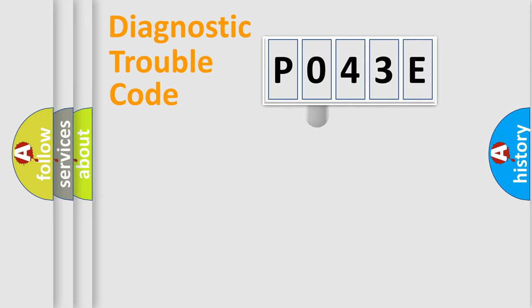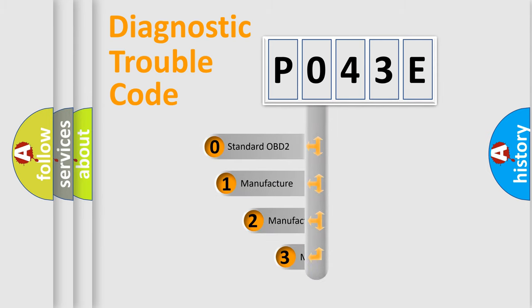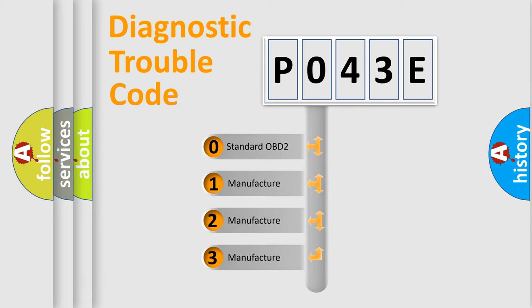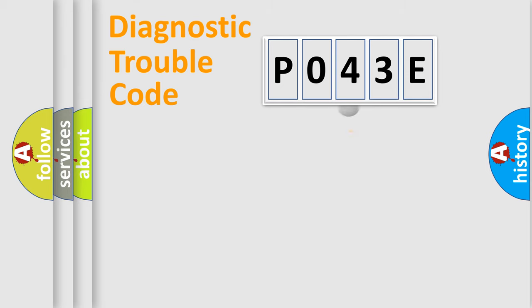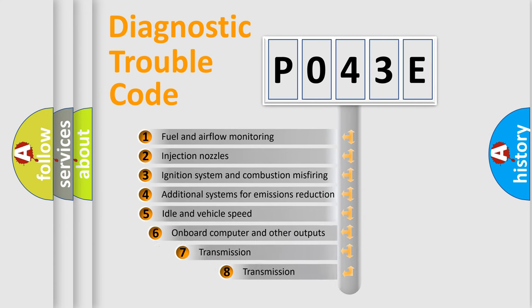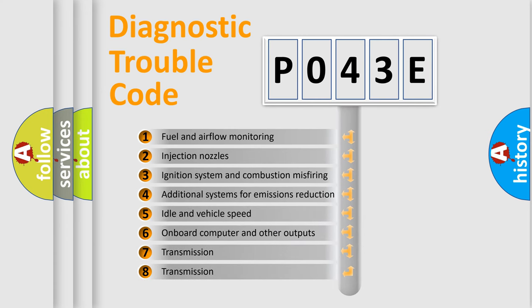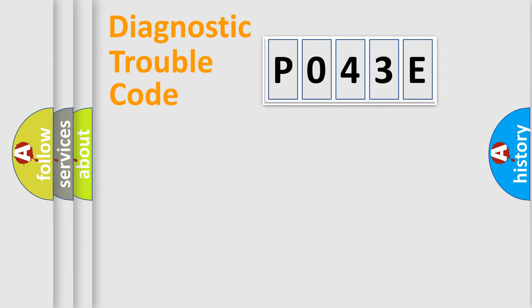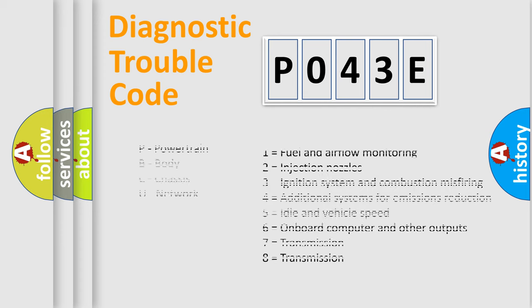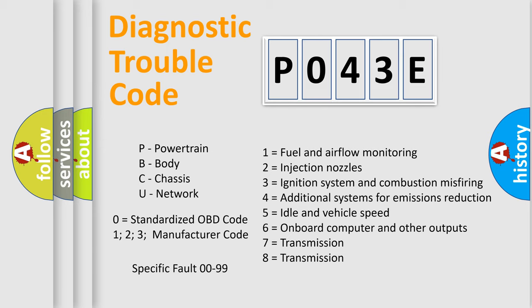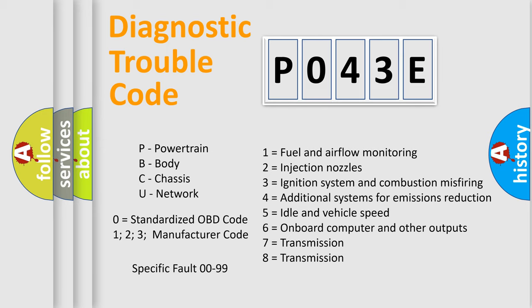This distribution is defined in the first character of the code. If the second character is expressed as zero, it is a standardized error. In the case of numbers 1, 2, or 3, it is a more specific expression of a car-specific error. The third character specifies a subset of errors. This distribution is valid only for the standardized DTC code, and only the last two characters define the specific fault of the group. This division is valid only if the second character code is expressed by the number zero.